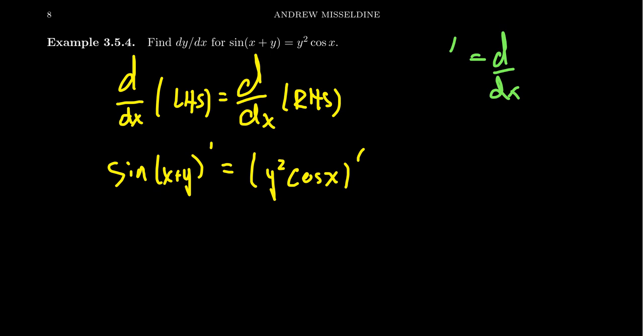To take the left-hand side first, we have to find the derivative of sine of x plus y. This is where the chain rule is going to come into play. The chain rule is critical whenever you do any calculation with implicit differentiation. We have basically two functions in play: the sine function, which is the outer function, and sitting inside of it is the function x plus y. I'm drawing these little links of the chain here to emphasize why this is called the chain rule.